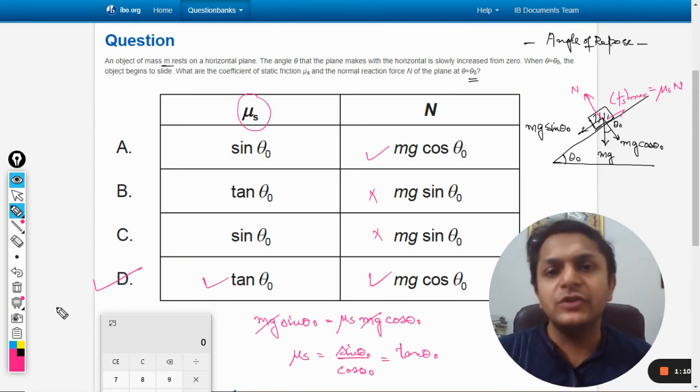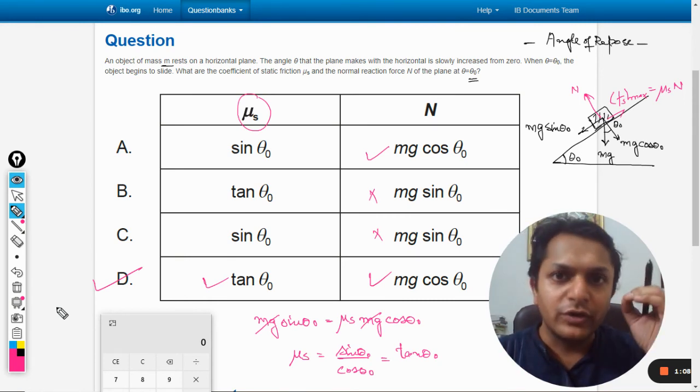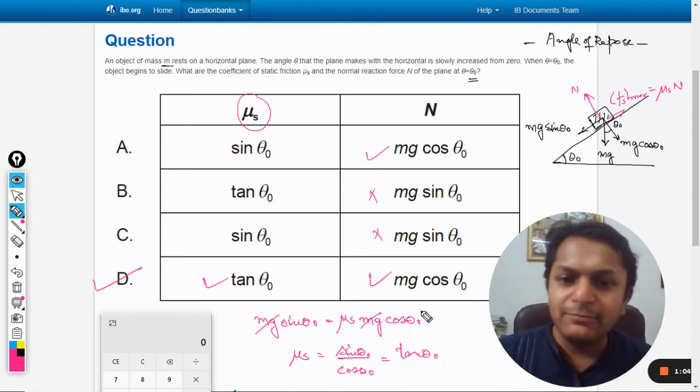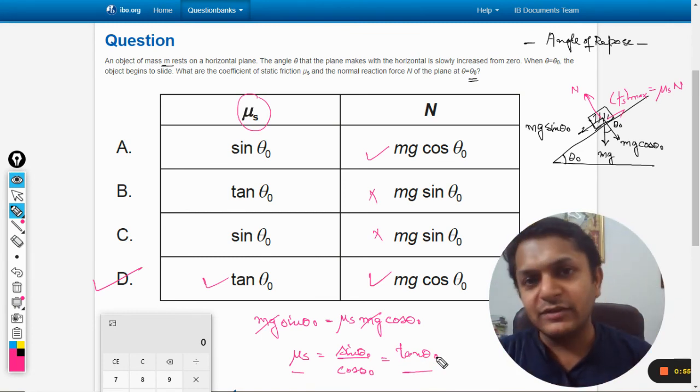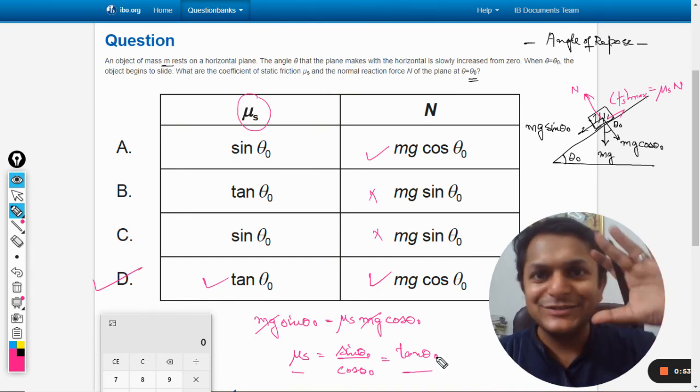This is part of the theory, so if you want to remember the results, like μs equals tan theta, it is always going to be this. It will never change its value, so we are very safe if we remember these formulas. All the best, bye.